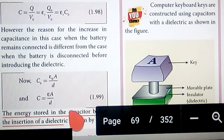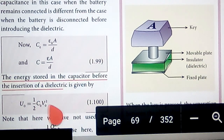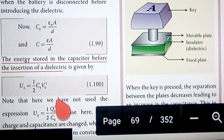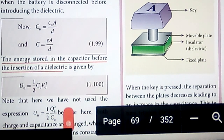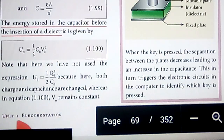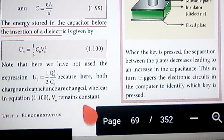The energy stored in the capacitor before the insertion of the dielectric is given by U₀ = ½ · C₀ · V₀², which is equation 1.100. Here we have not used the expression U₀ = ½ · q₀² / C₀ because the charge and capacitance are changed; whereas in equation 1.100, V₀ remains constant.